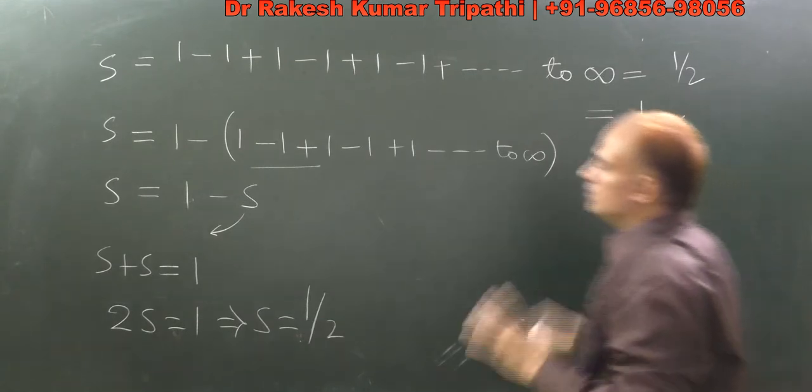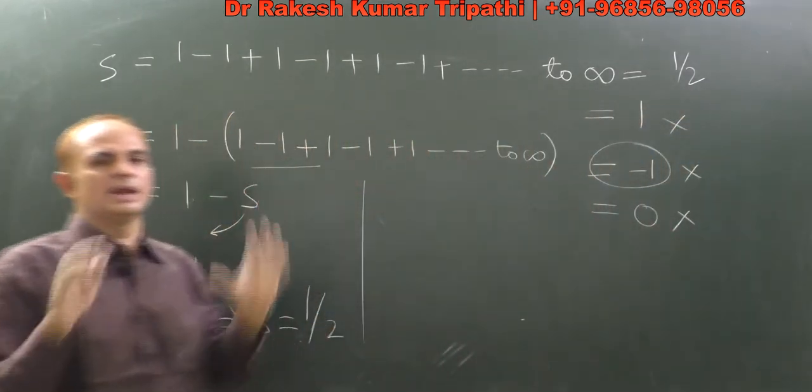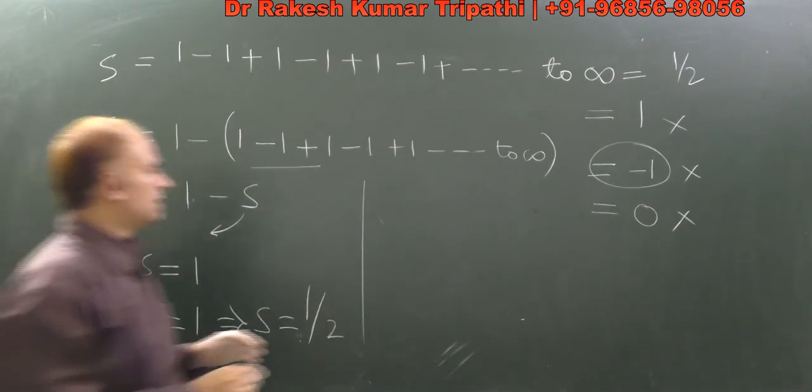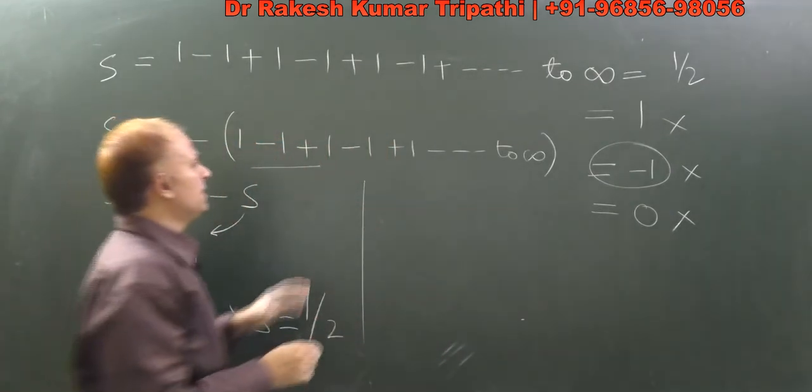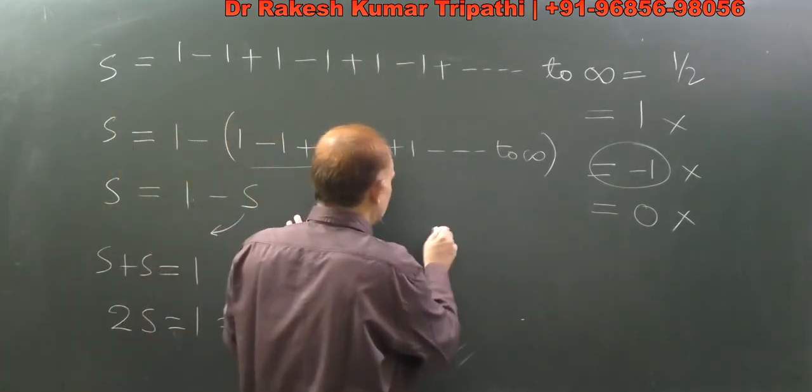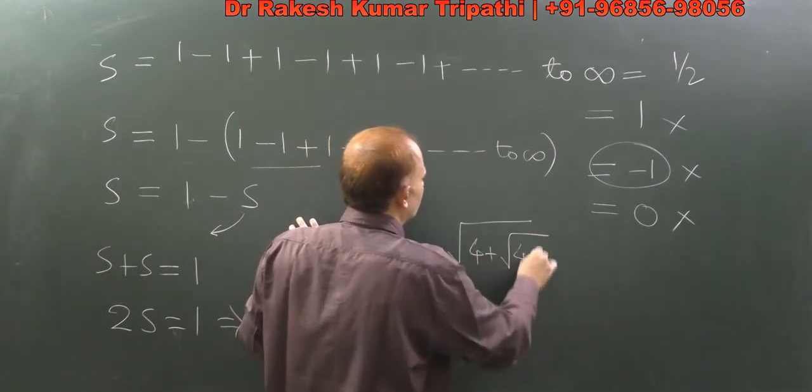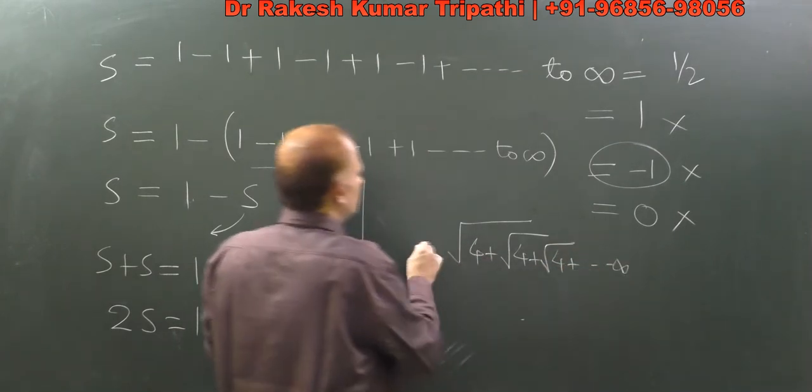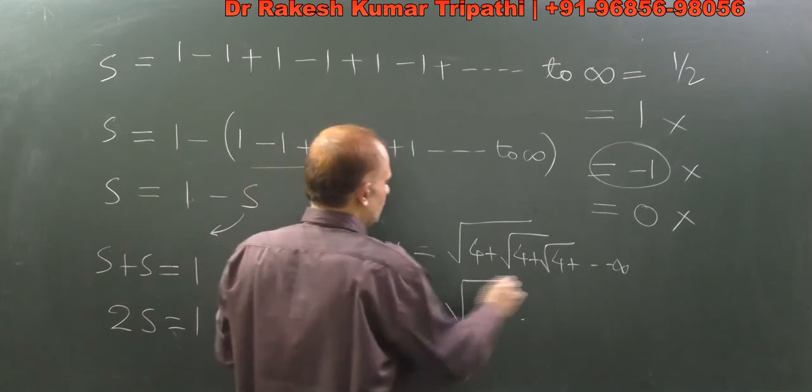where you find, like in quadratics, if you have √(4 + √(4 + √(4...))) till infinity, you write this as x, and x equals √(4 + x), and you find the correct answer. But certainly, its